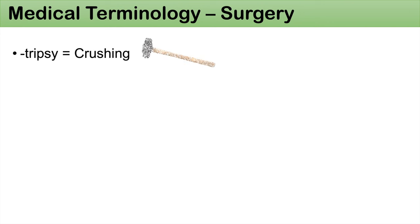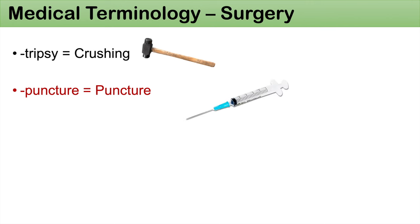The suffix -tripsy means crushing, or to crush something. The suffix -puncture really means puncture, so you can think of words like acupuncture. The prefixes per- and dia- mean going through something. So you can think of percutaneous — going through the skin — or dialysis.